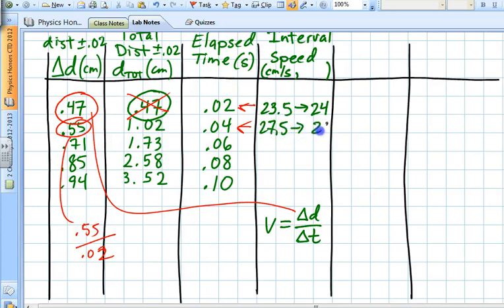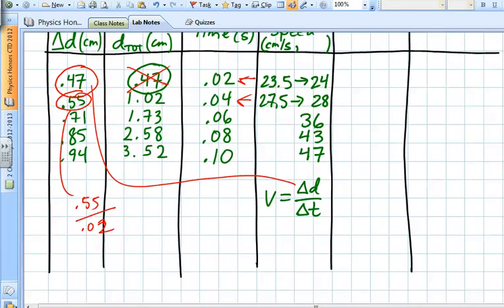For the next one, it's not 1.73 over 0.06, it's 0.71 divided by 0.02, and again that rounds to 36. 0.85 divided by 0.02 is 43, and 0.94 divided by 0.02 is 47. So once again, I want to reiterate that when we're finding the interval speed, or in other words what was the speed of the puck on average as it went from one dot to the next, we're taking the interval distance, which is column one, and then we're always dividing by 0.02 seconds. So it's very important that we do this.